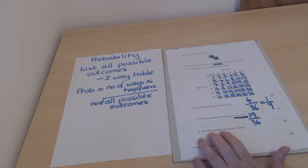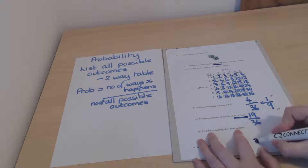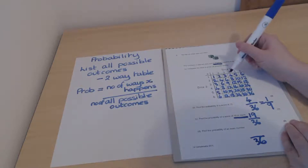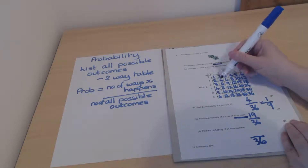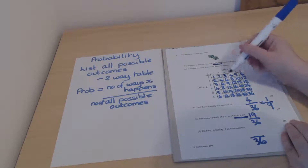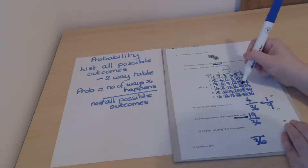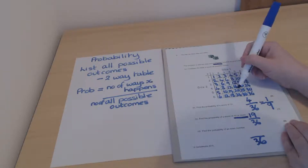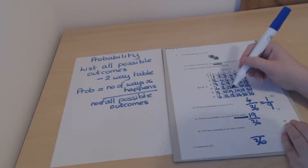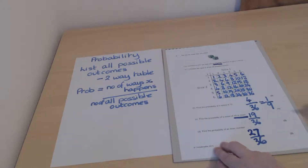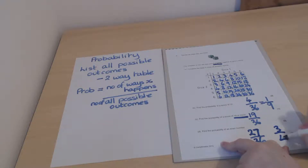Finally, find the probability of getting an even number. Still out of 36. Counting all even numbers in the table gives 27. This simplifies because both numbers divide by 9, leaving us with 3/4.